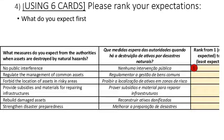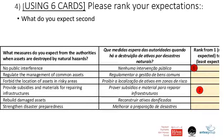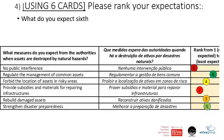Question four: what measures do you expect from the authorities when assets are destroyed by natural hazards? In this hypothetical example: number one is no public interference; number two is provide subsidies and materials for repairing infrastructure; number three is rebuild damaged assets; number four is forbid the location of assets in risky areas; number five is strengthen disaster preparedness; and number six is regulate the management of common assets. Don't force the answer and don't let the answer be biased — let them really answer according to their preferences.